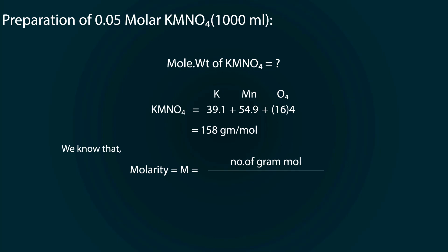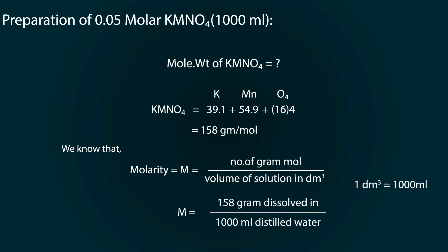We know that molarity equals number of gram moles divided by volume of solution in cubic decimeters. Since 1 cubic decimeter equals 1000 milliliters, we need to dissolve 158 grams in 1000 milliliters for 1 molar.